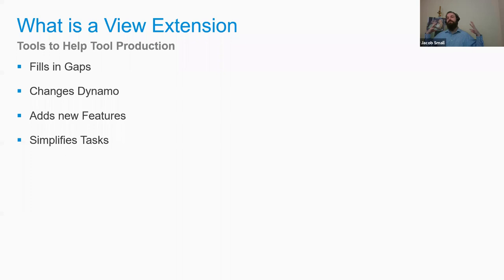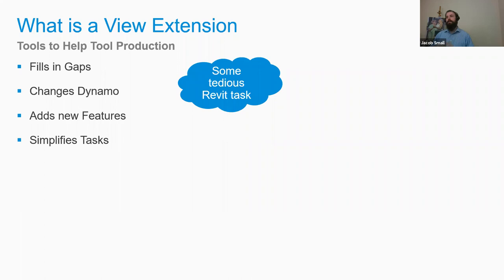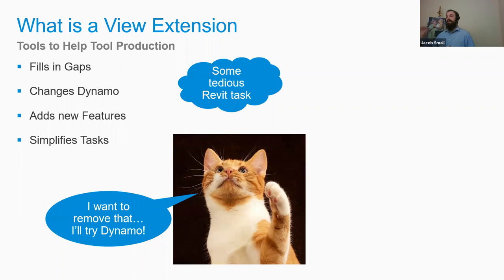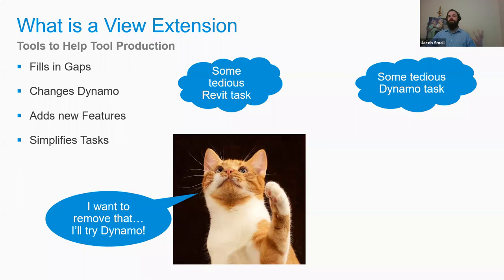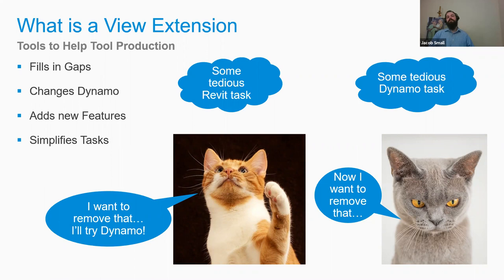So what exactly is a view extension? Basically, they're tools to help you produce tools, because Dynamo is a tool for building automation tasks. They fill in the gaps, change the way Dynamo works, add new features, and simplify tedious tasks. A lot of times people get into Dynamo to automate tedious Revit tasks, only to find they've added new tedious Dynamo tasks — managing inputs, annotating graphs, and so on. That's really where view extensions mostly tend to fall in.